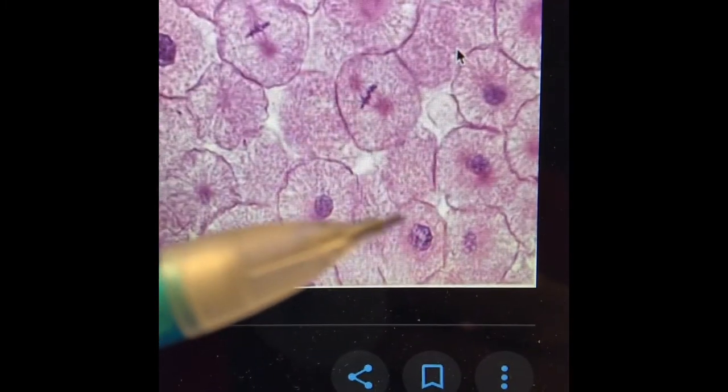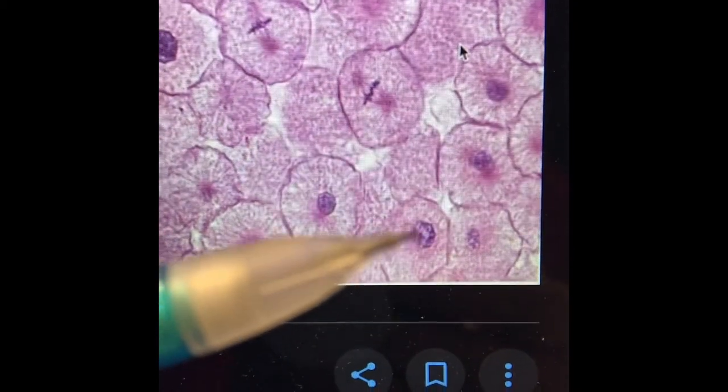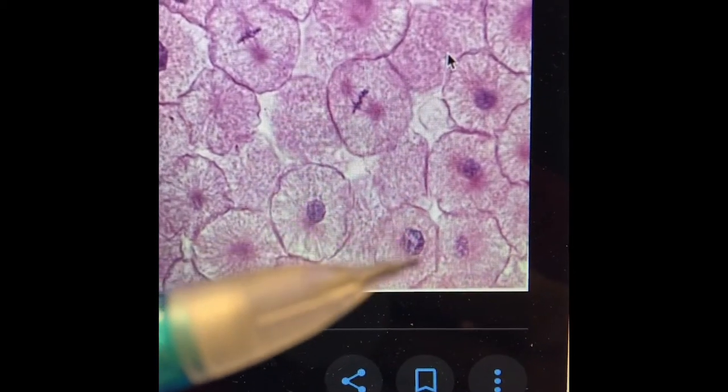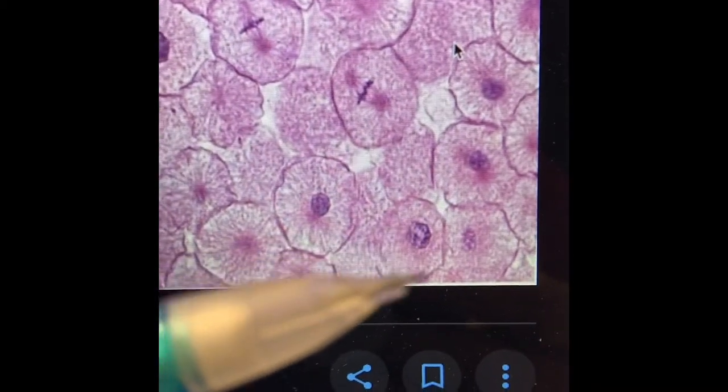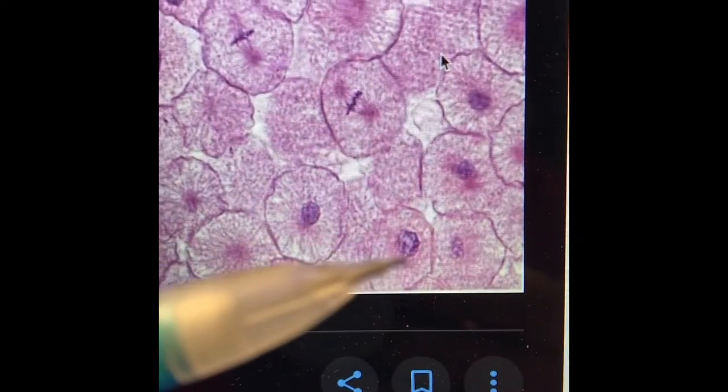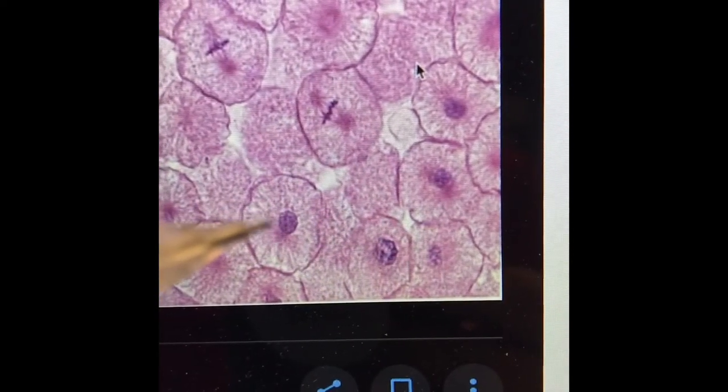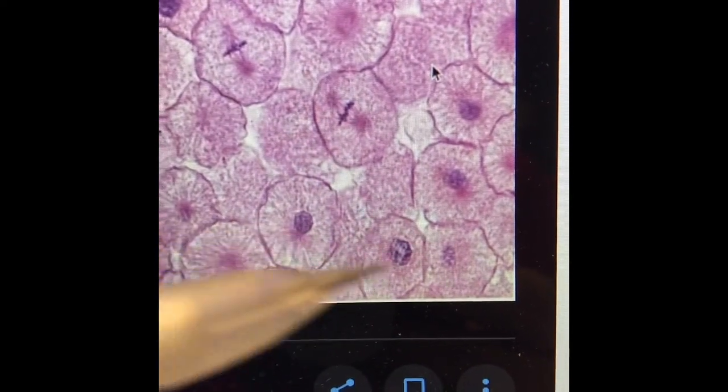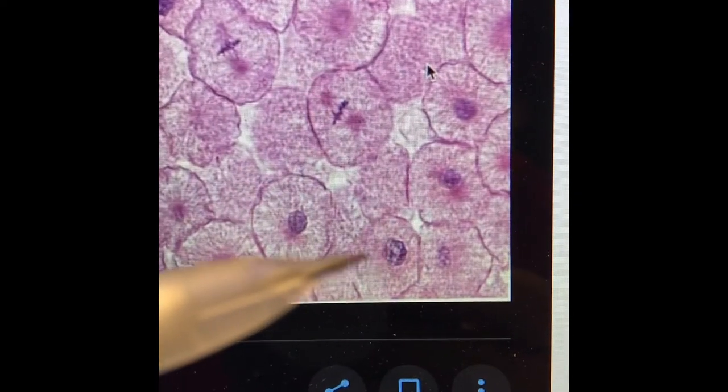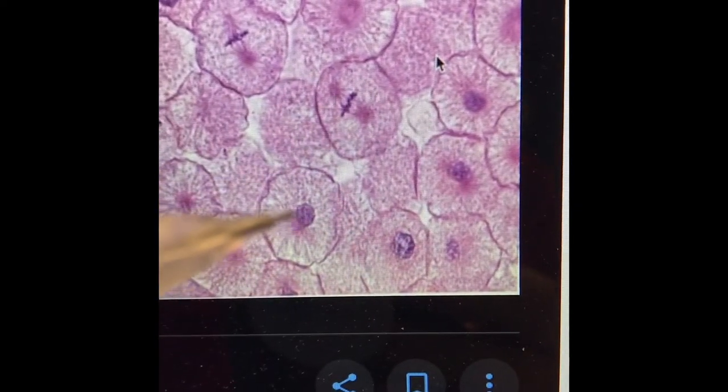But compare that to maybe this one right here. Which you see the nucleus looks a little larger. Because the DNA is thickening, coiling, and condensing. And the nuclear envelope is disintegrating. So if you just compare this one to this one. This is a great comparison of what my pencil is on now. Interphase. That's a great prophase. So I see interphase right here. Prophase.